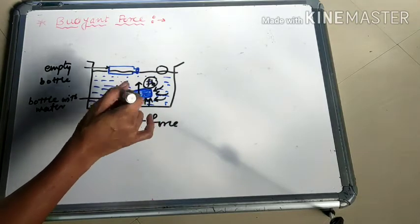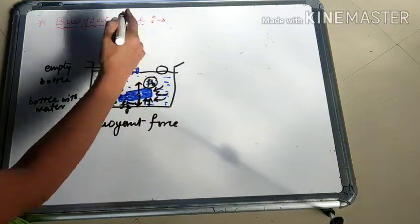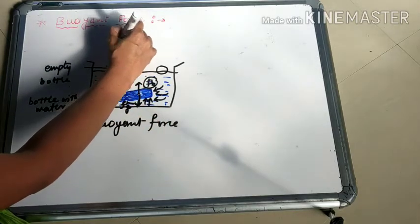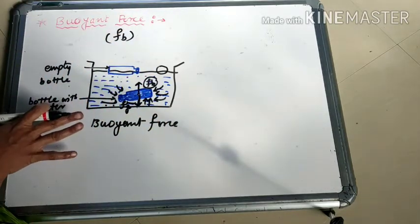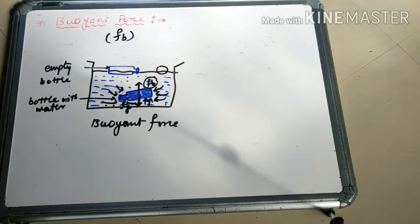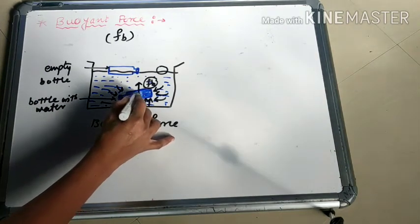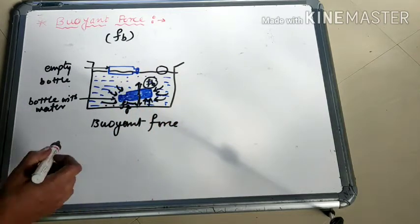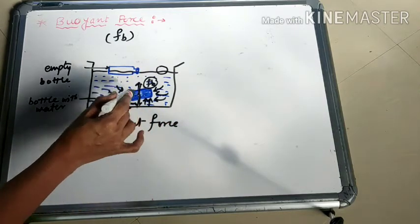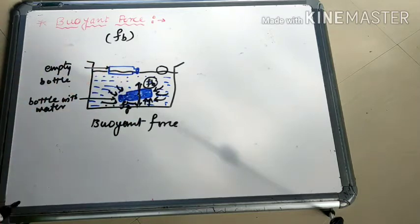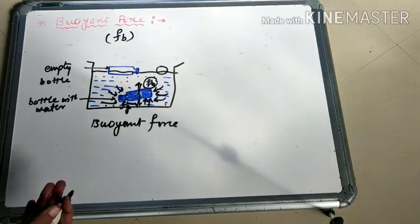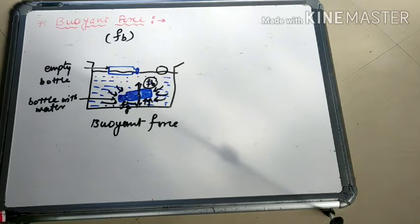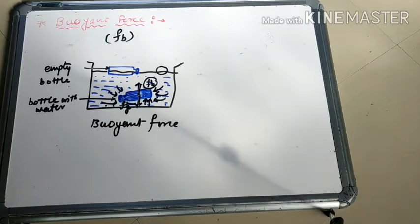This upward force acting on the object in water, or other fluid, or also gas — not only in any fluid but also in gas — is called the Buoyant force, denoted by FB. The upward force acting on any object present in water, fluid, or gas is called Buoyant force.